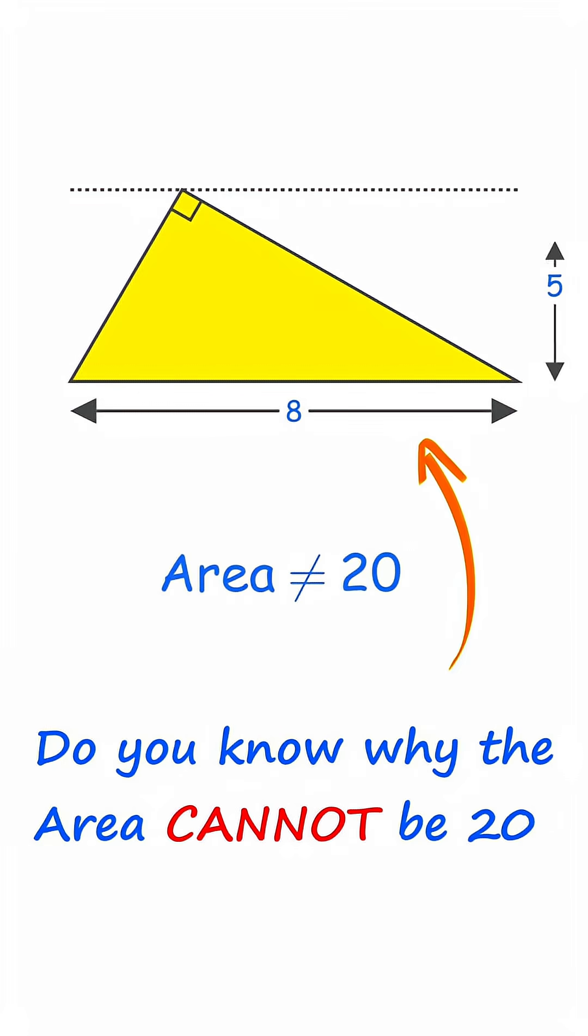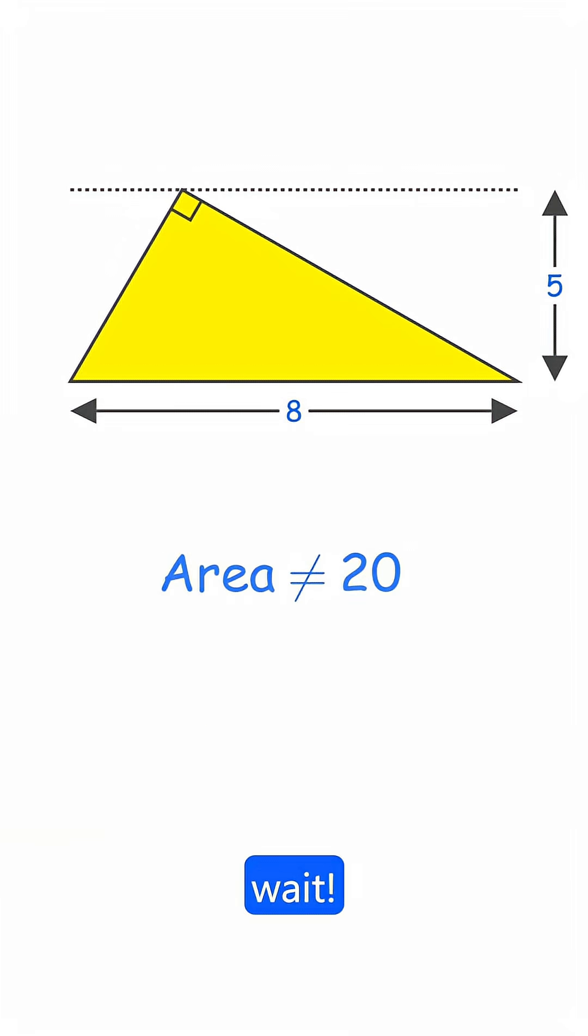Do you know why the area of this triangle cannot be 20? But wait! We know that area is half of base times height, and if the base is 8 and height is 5, shouldn't that give 20? Let's dive a bit deeper.